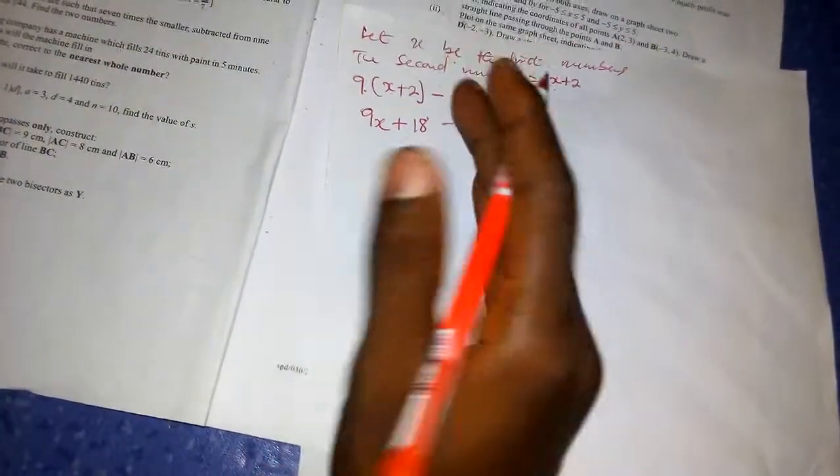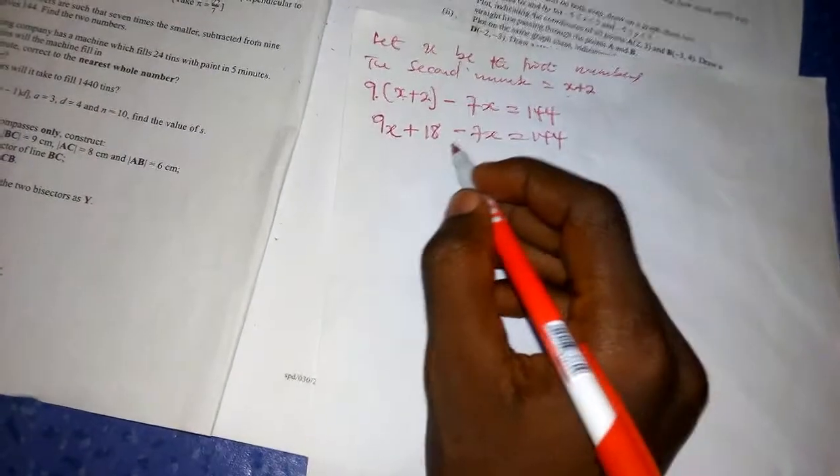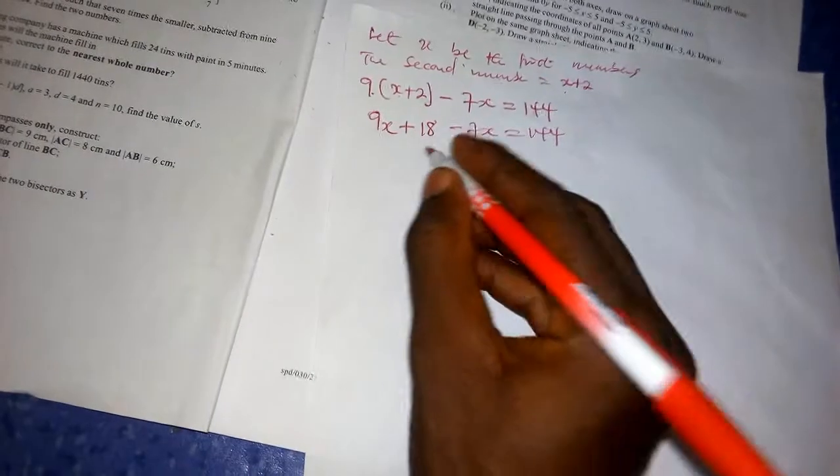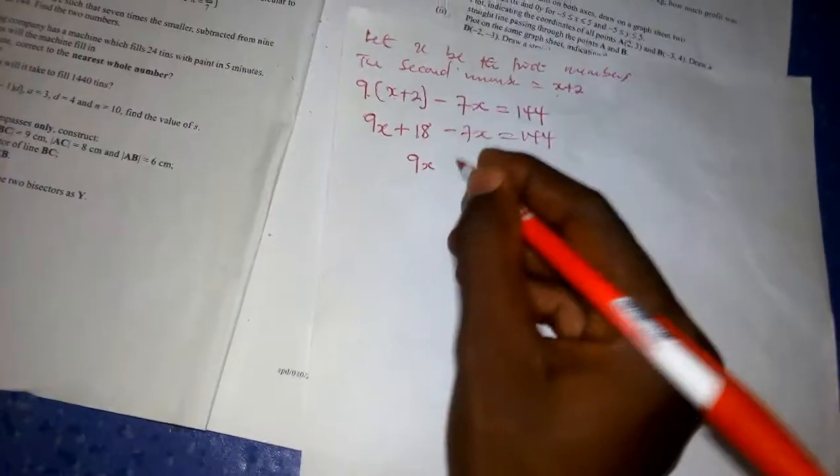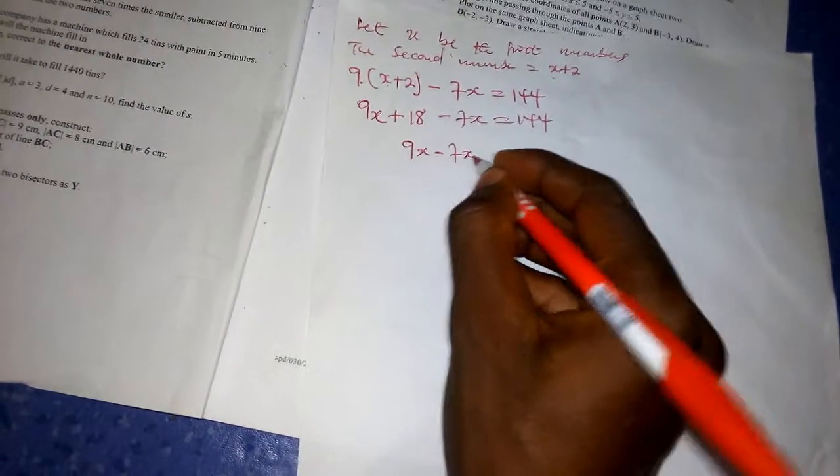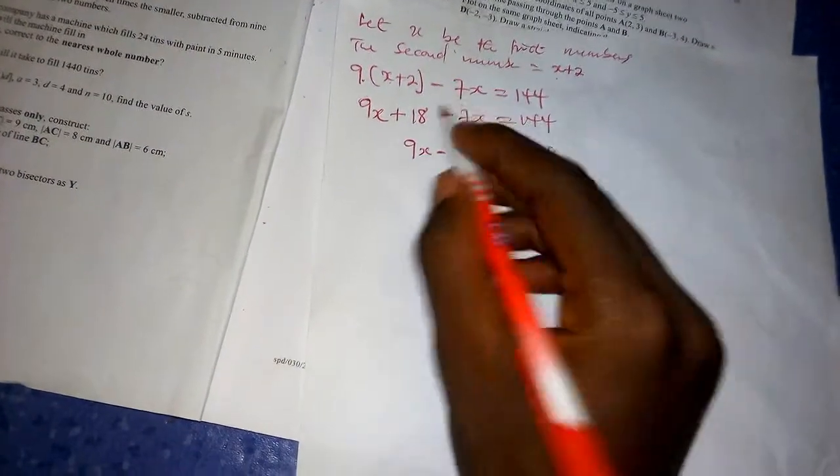Now you group like terms by sending the numbers with variables to one side of the equal sign and the ones without variables to the other side of the equal sign. This would be 9X minus 7X equals 144...